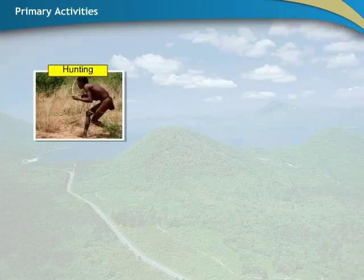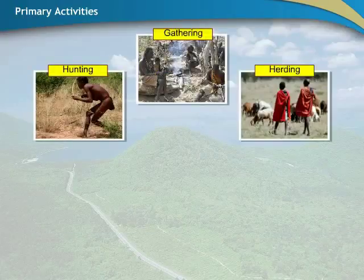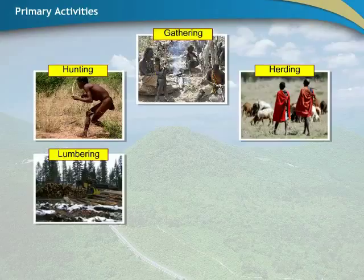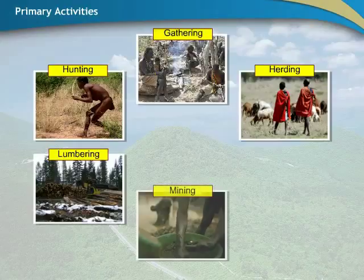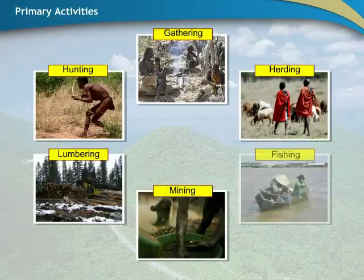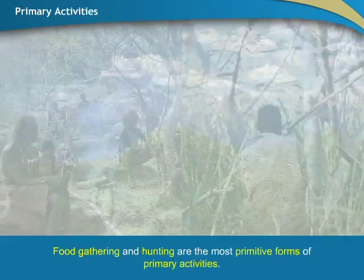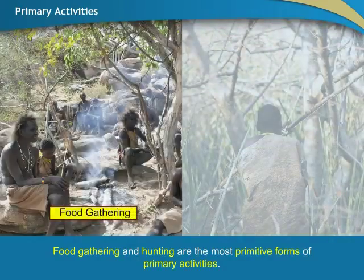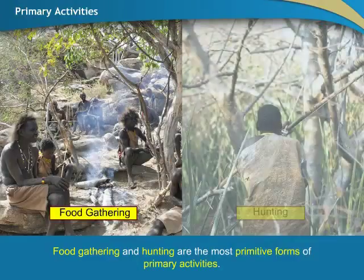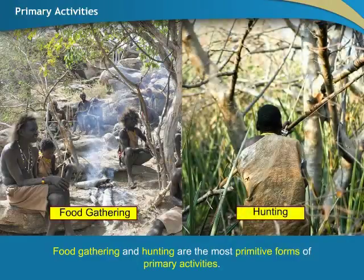Hunting, gathering, herding, lumbering, mining, fishing and agriculture are examples of primary activities. Amongst these activities, food gathering and hunting are the most primitive forms of primary activities.